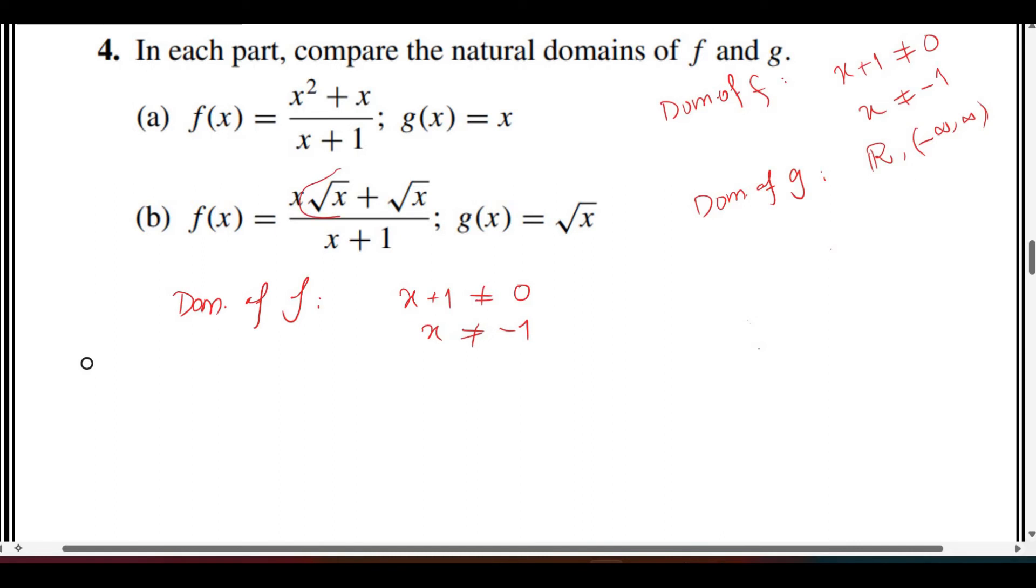Second, there is a square root in the numerator. Whatever is inside the square root should be greater than or equal to 0, so x is greater than or equal to 0.